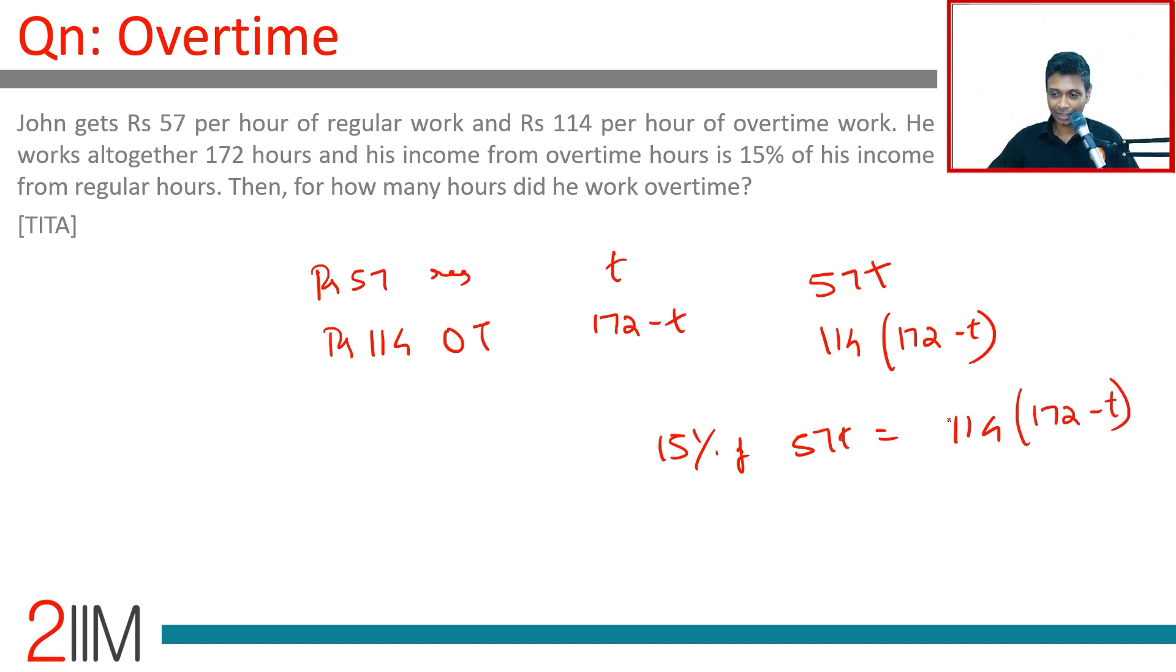114 is 2 times 57, so 15 by 100, which is 3 by 20, times t equals 2 times 172 minus t.